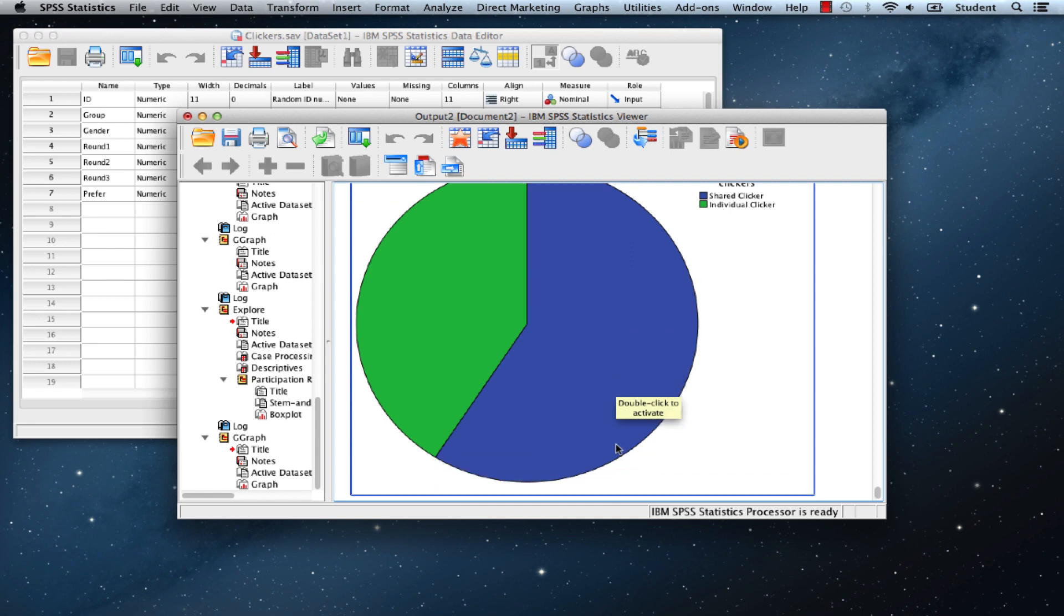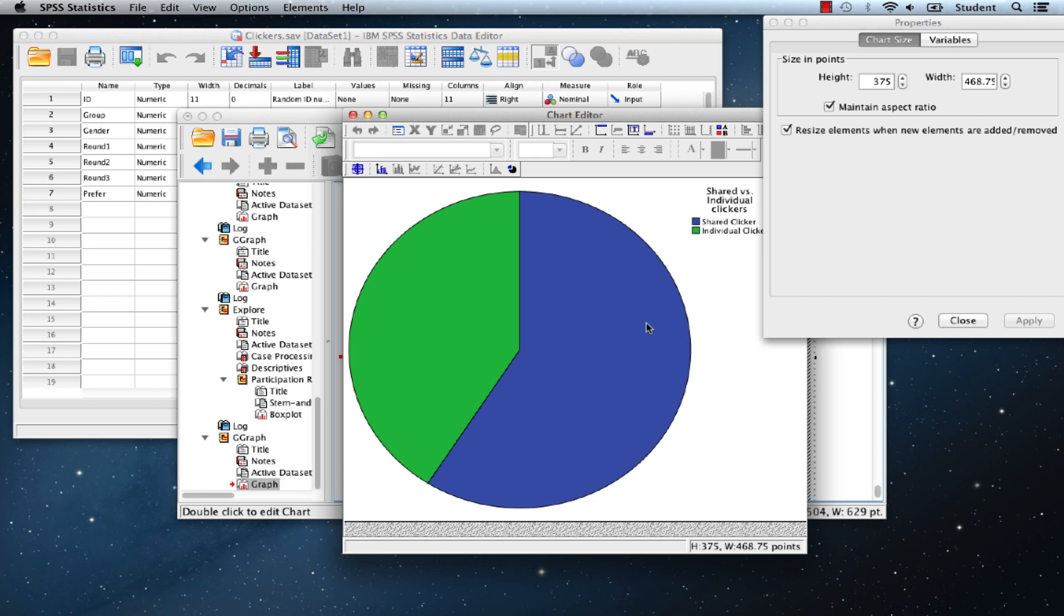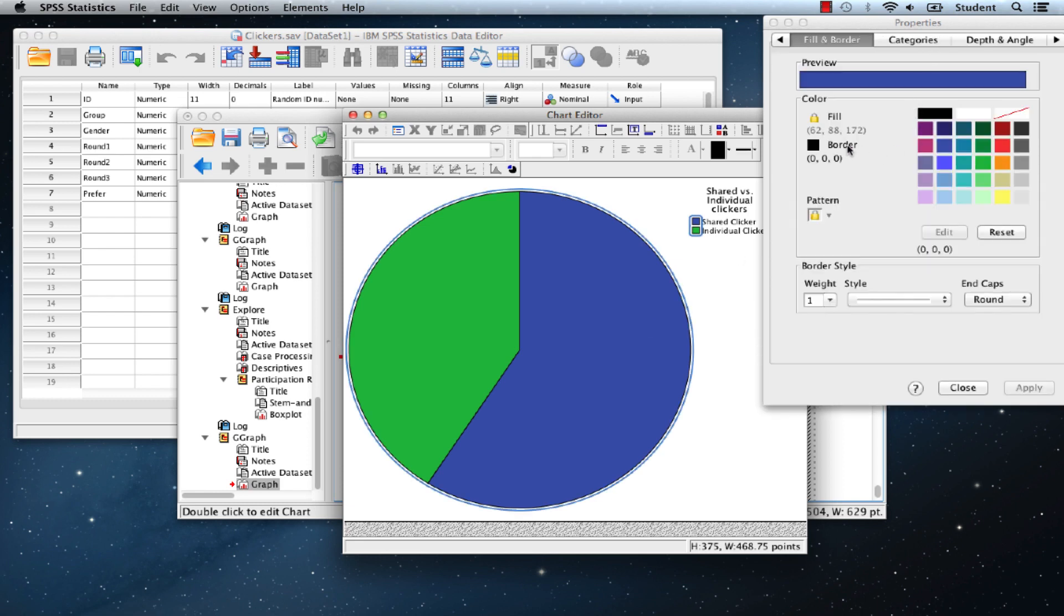There's our output. You can double click and use the properties values to change the fill or the border or any of the settings for this bar chart.